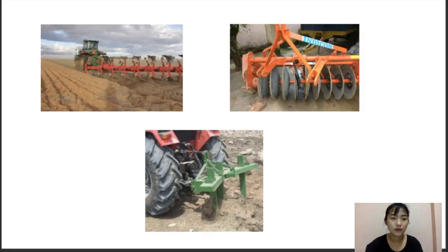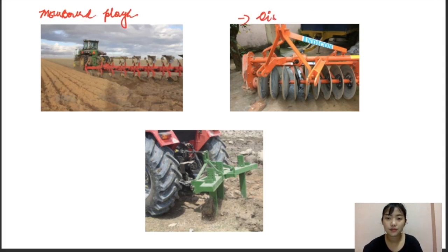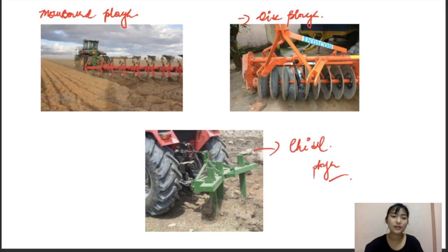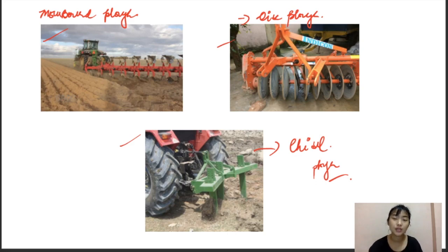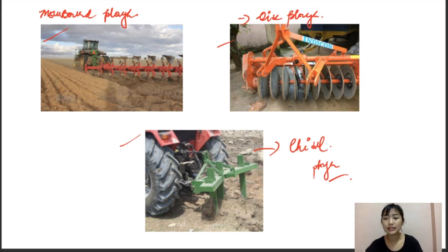Examples of primary tillage implements include the moldboard plow, disc plow, and chisel. The main objectives of primary tillage are to reduce soil strength, rearrange compacted soil, cover plant materials, bury weeds, and help in killing insect pests.